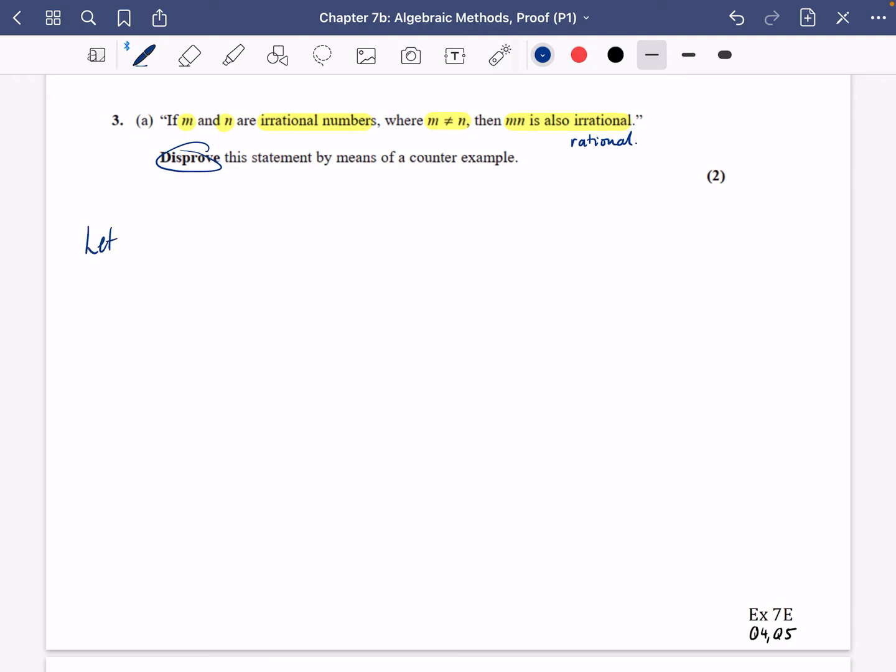So we need to think of what m and n could be equal to. They're not allowed to be the same as each other, but they do need to multiply to something that is rational. So I think someone in my class came up with √12 and √3, because then mn would be equal to √12 times √3, which is √36, which is equal to 6. And we should say 6 is rational. Hence, statement is disproved.